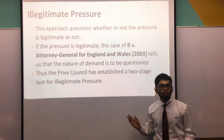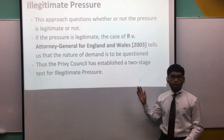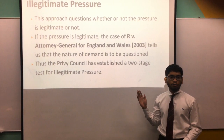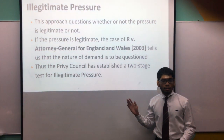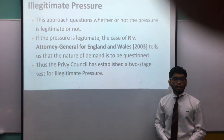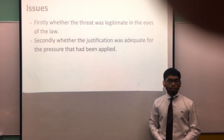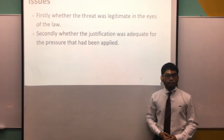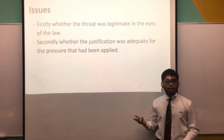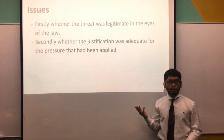Under the illegitimate pressure theory, the approach questions whether the pressure applied to an individual was legitimate or not. In R v Attorney General of England and Wales (2003), concerning an SAS soldier forced to sign a confidentiality agreement with the Ministry of Defence, the Privy Council established a two-stage test for illegitimate pressure. The first issue was whether the threat was legitimate in the eyes of the law — whether it was legal to make the threat. Secondly, the justification behind the threat must have been adequate. If, for example, the threat was for unjust enrichment, the justification was inadequate, and it can be seen that illegitimate pressure was applied.